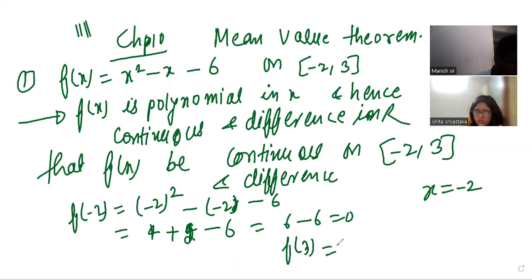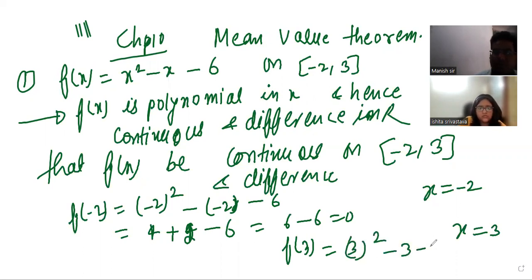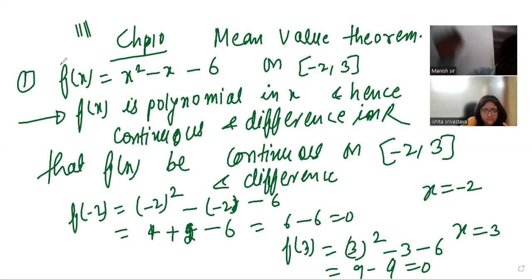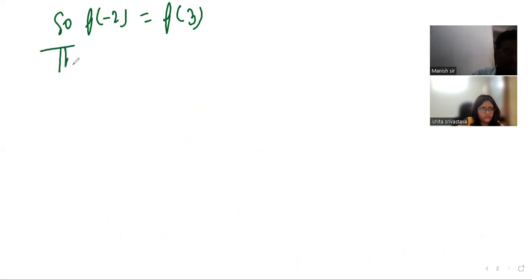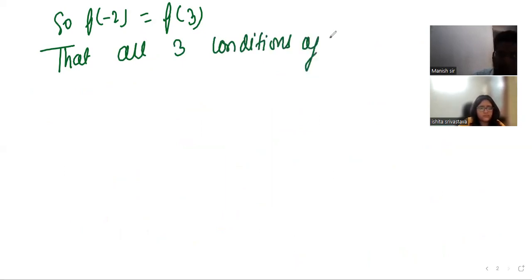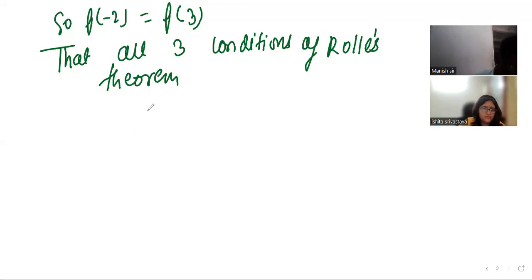Similarly, put x = 3 in the function. It becomes 3² - 3 - 6, which is 9 - 9 = 0. So f(3) = 0 as well. Since f(-2) = f(3), all three conditions of Rolle's theorem are satisfied: the function is continuous, differentiable, and takes equal values at both endpoints.